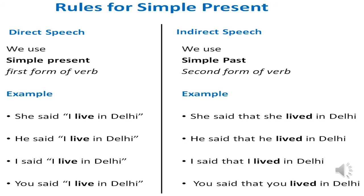Here simple present will be changed into simple past. We use the simple present first form of the verb in direct speech, and in indirect speech we use the simple past second form of the verb. For example: 'She said I live in Delhi' becomes 'She said that she lived in Delhi.' Similarly, 'He said I live in Delhi' becomes 'He said that he lived in Delhi.' 'I said I live in Delhi' becomes 'I said that I lived in Delhi.' 'You said I live in Delhi' becomes 'You said that you lived in Delhi.'